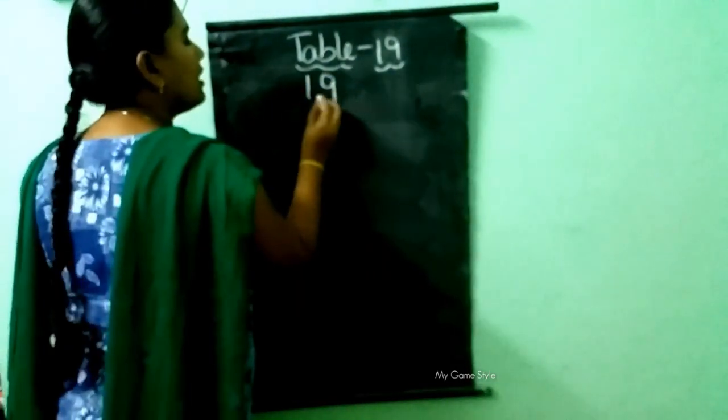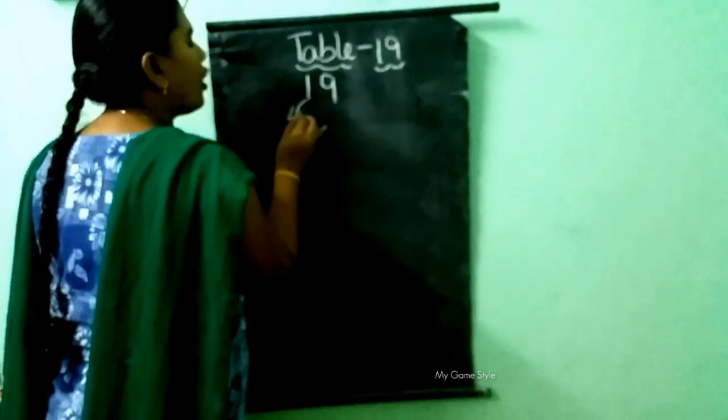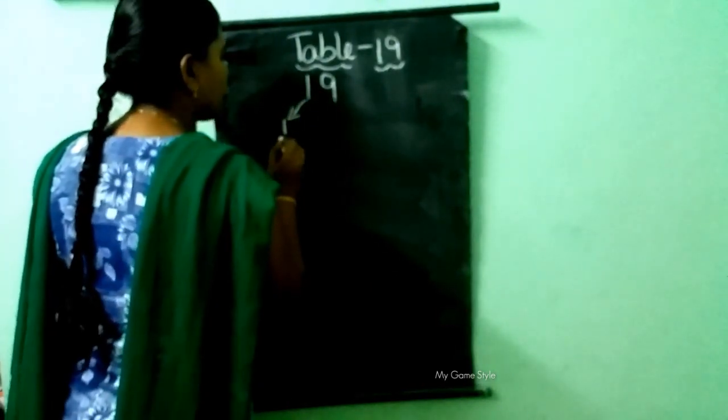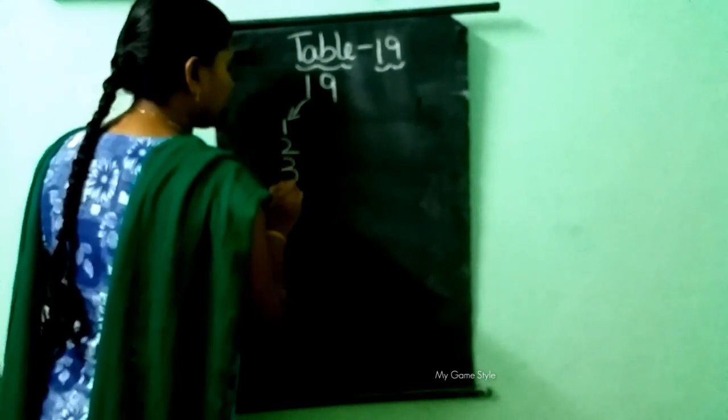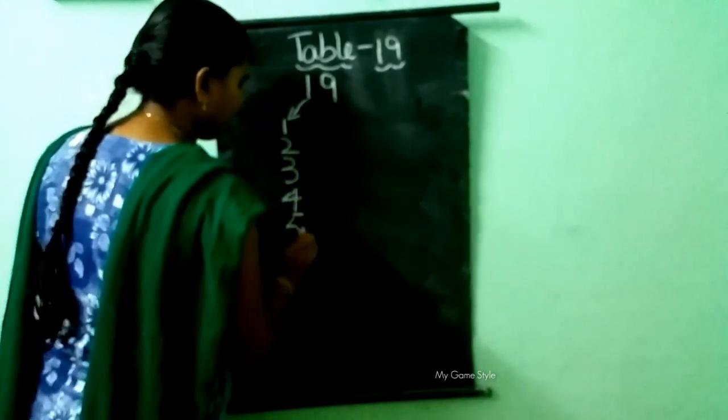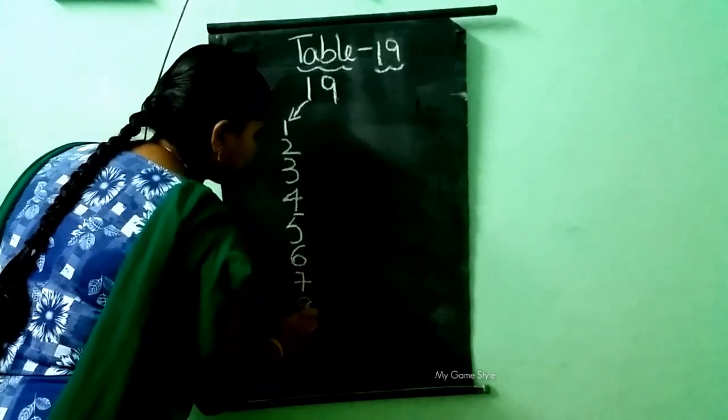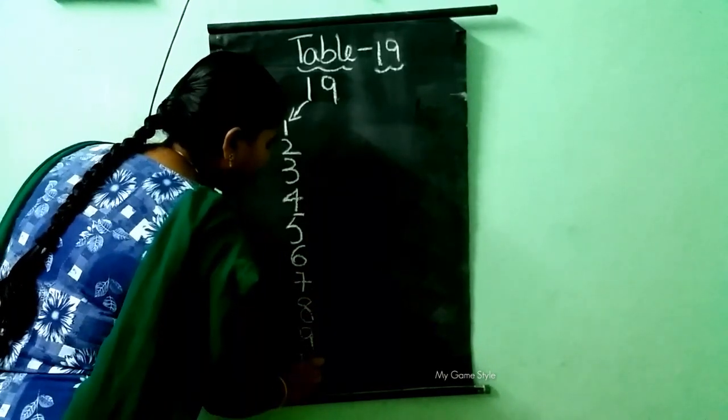19. This is 1. So we need to write here the 1 table, children. 1, 2, 3, 4, 5, 6, 7, 8, 9, and then 10.